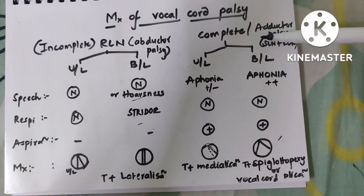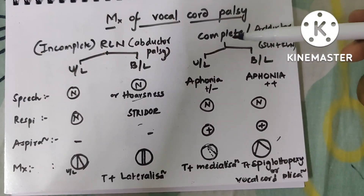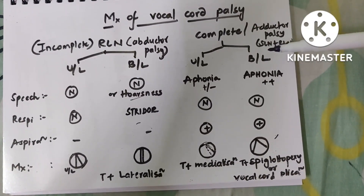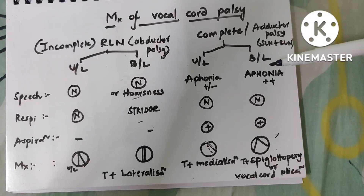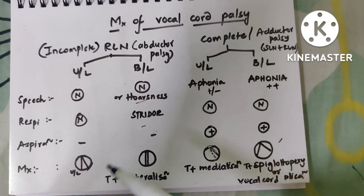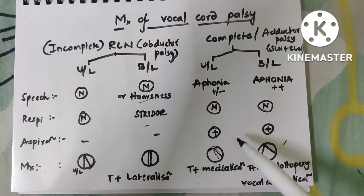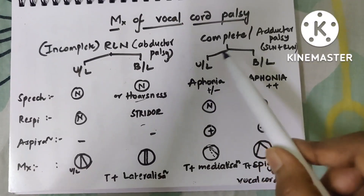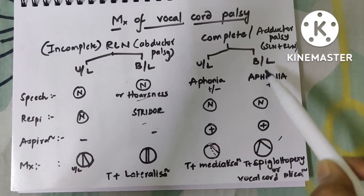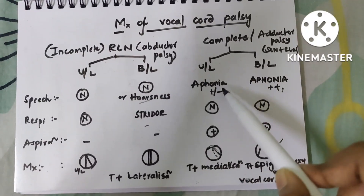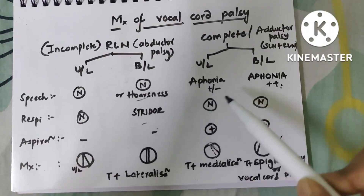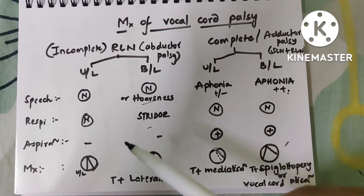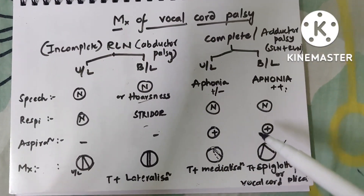In complete palsy — both unilateral and bilateral — the SLN is also involved. Since the ILN is lost, aspiration occurs because sensation above the vocal cords is gone. In bilateral complete palsy, aphonia is seen; in unilateral complete palsy, aphonia may sometimes be missed. Respiration here is normal because the vocal cords are placed far apart.